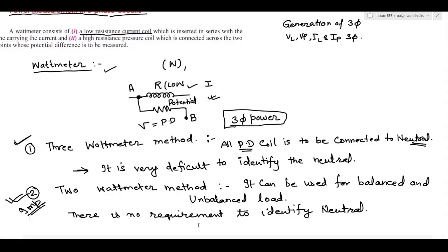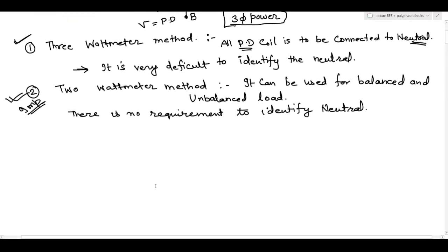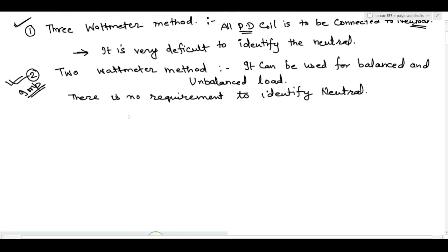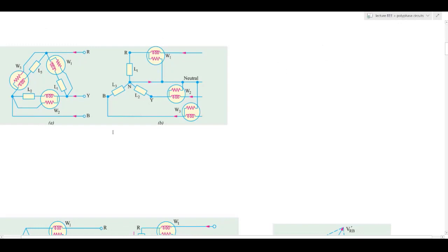This two wattmeter method is very important because in all university exams this method is generally tested. There is also a one wattmeter method, but I am not going to discuss it in this class because it has limitations and is generally not used practically. So I am going to discuss the three wattmeter method and the two wattmeter method.